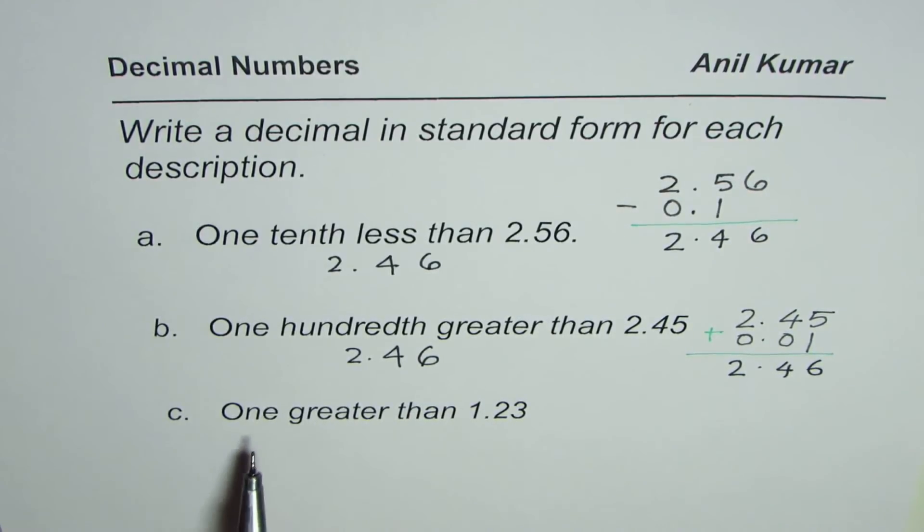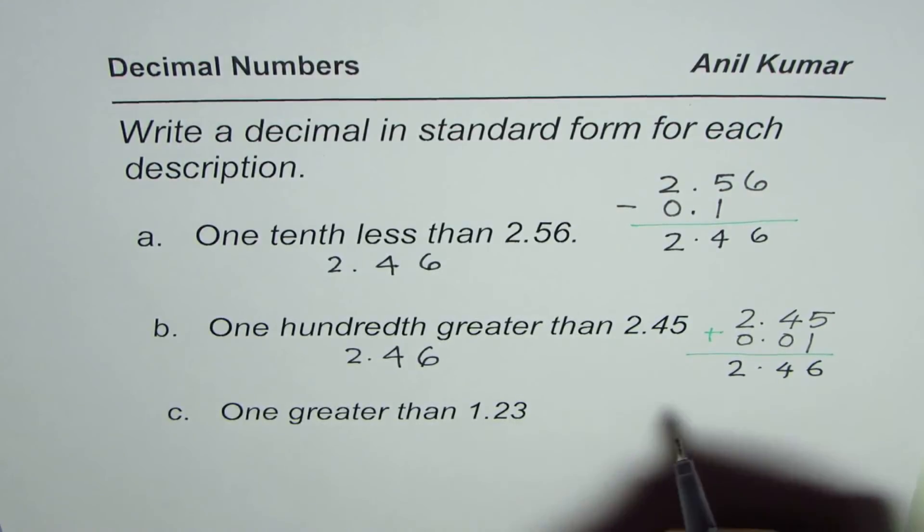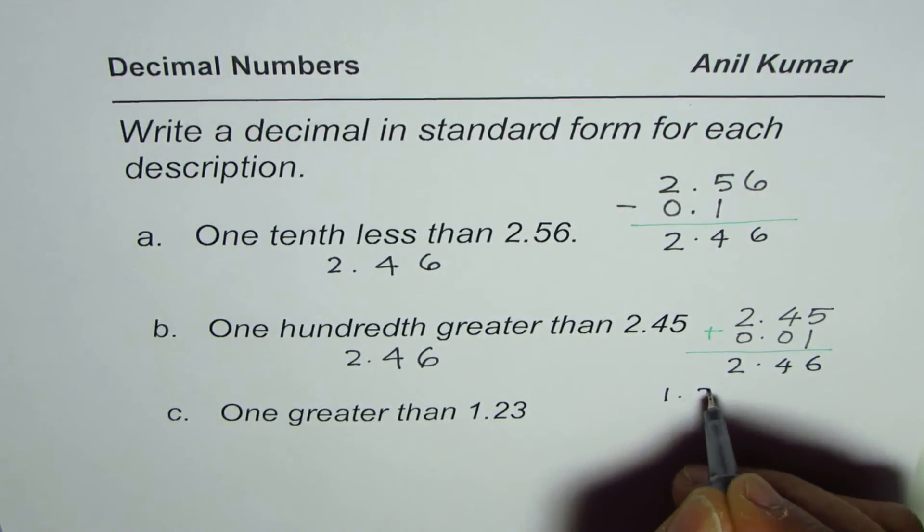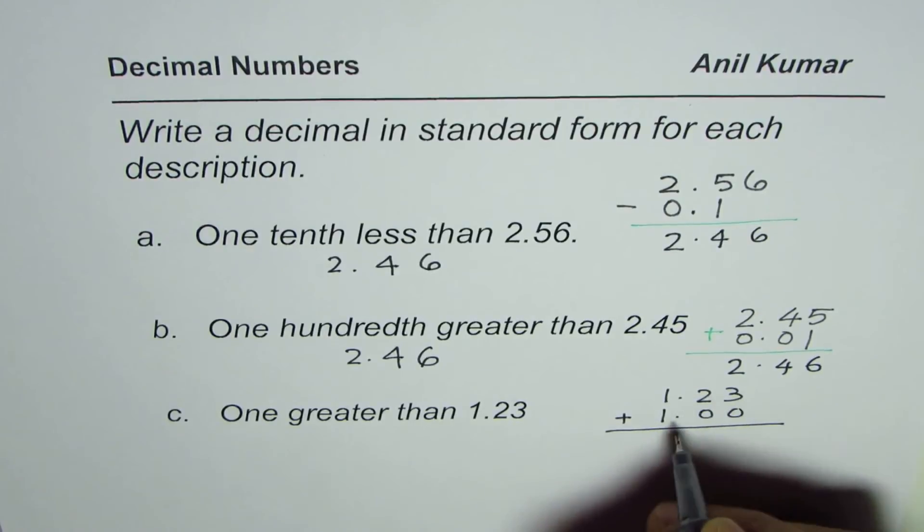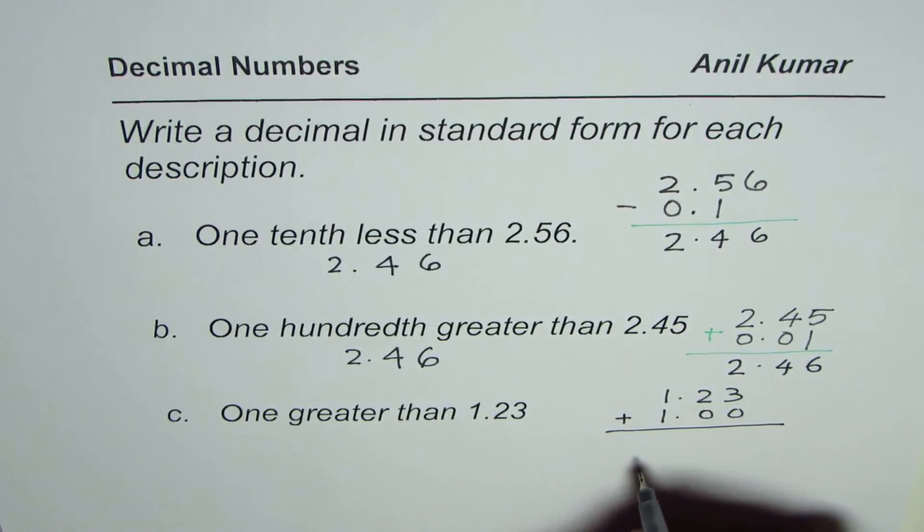The last one here is 1 greater than 1.23. So that means 1.23 we have to add 1. So what do you get here? So 1.00, that is 1 greater than 1.23. So that gives us 2.23 as our answer.